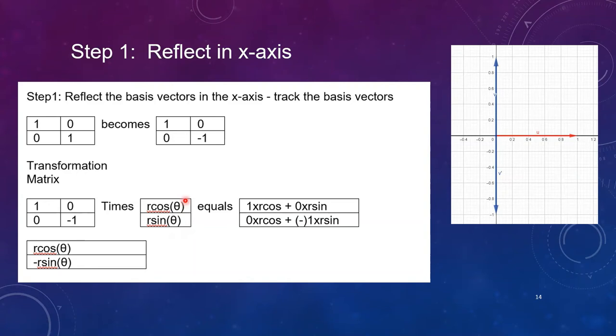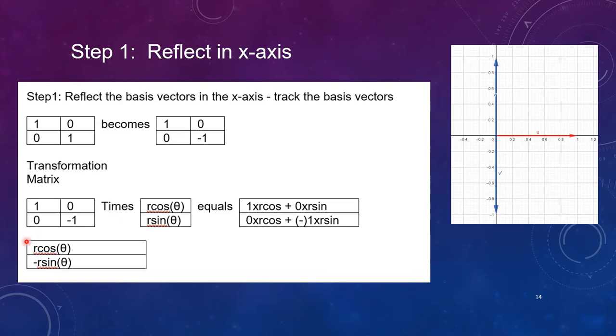We have a 2x1, 2x2 times a 2x1 and our answer is going to be a 2x1. Here I've shown my work for those who are interested, it's always nice to have lots of zeros when we're doing matrix multiplication. So I get this intermediate step which I'm going to carry over to the next step which as you recall was to rotate counterclockwise by 90 degrees.